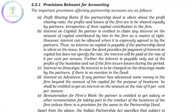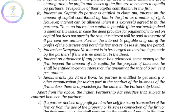If the deed does not provide for interest on capital, it will not be paid. For Interest on Drawings: if the deed charges interest on drawings, it applies accordingly. Next is Interest on Advances: if a partner gives a loan or advance to the firm and the deed does not specify a rate, interest is paid at 6% per annum.